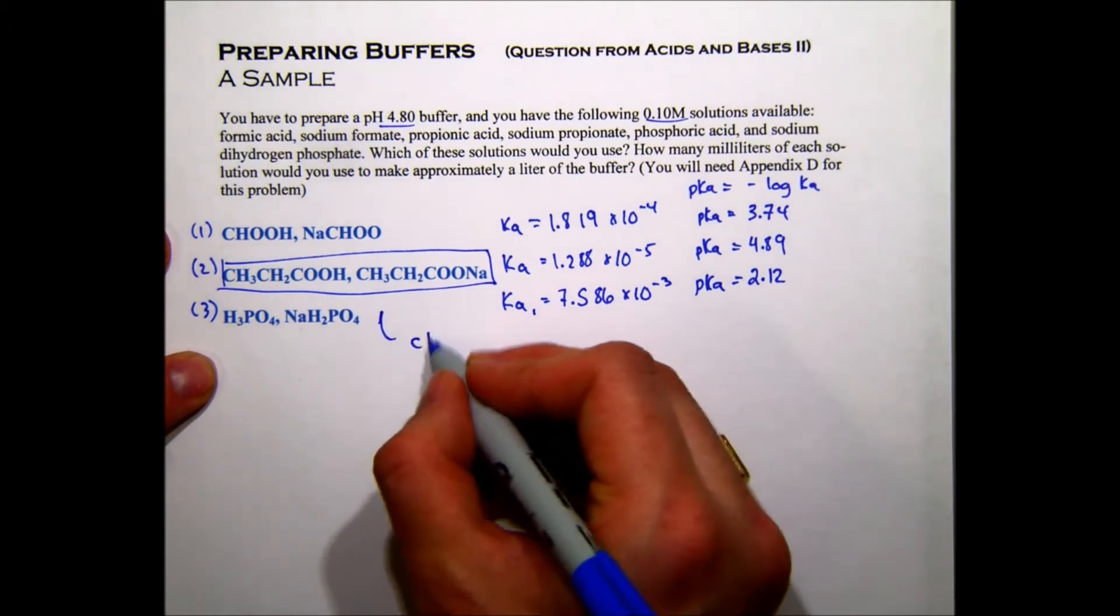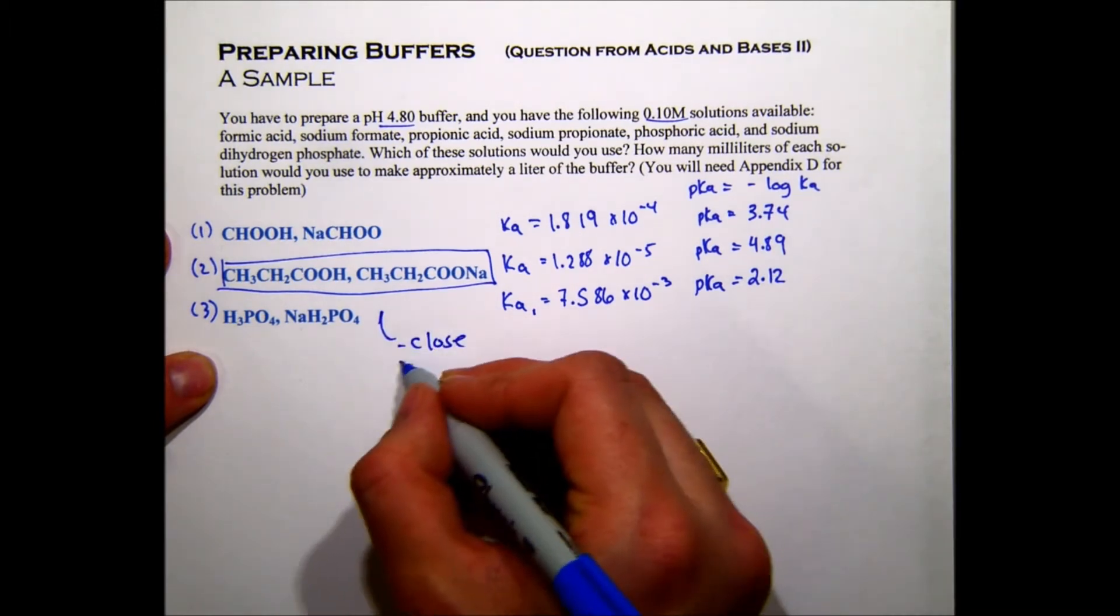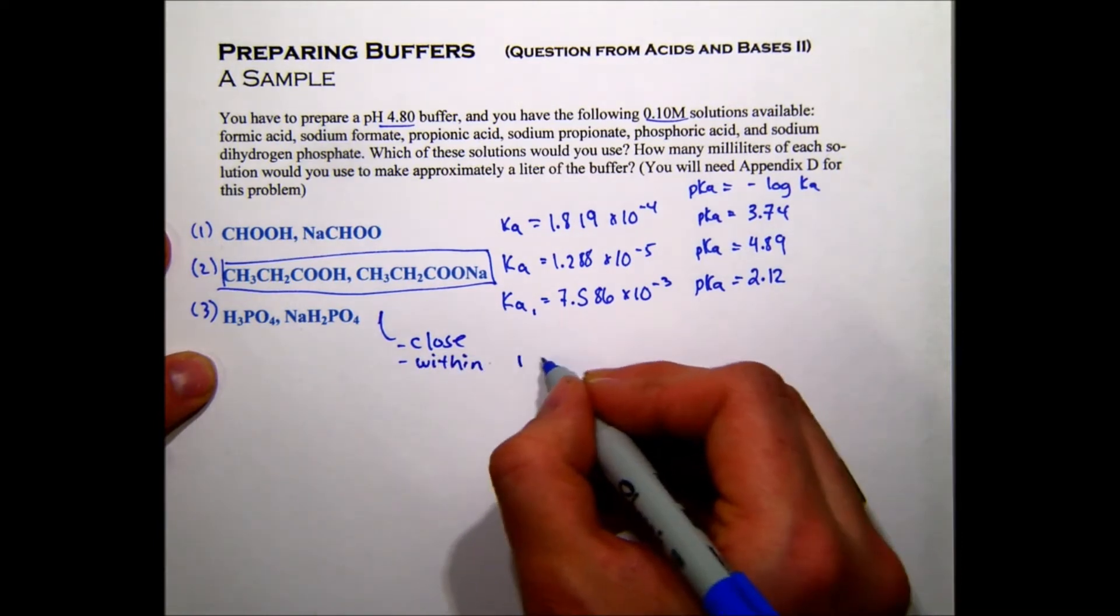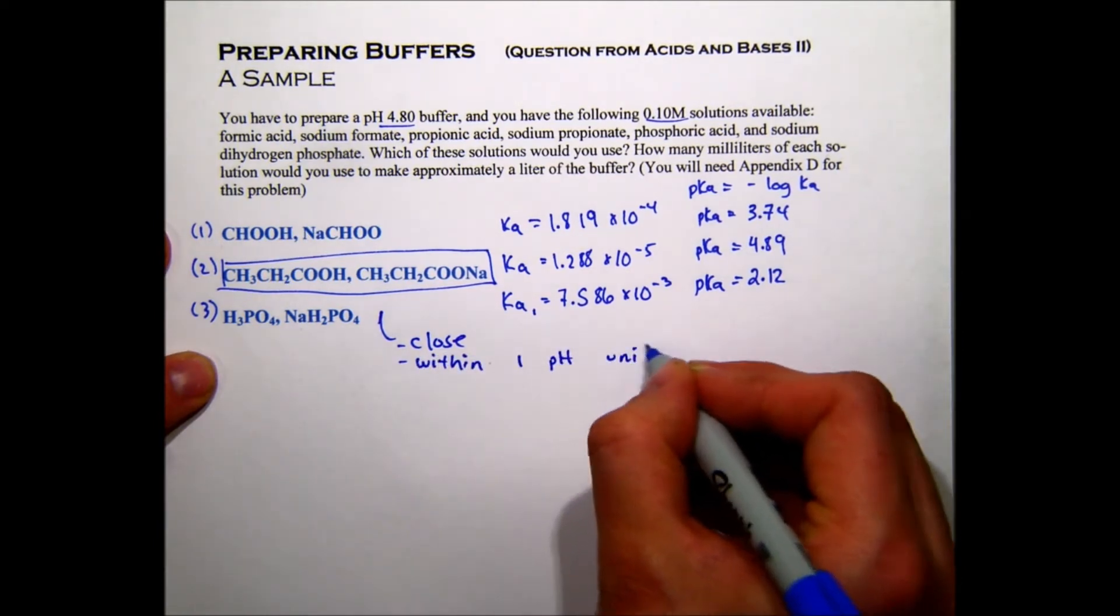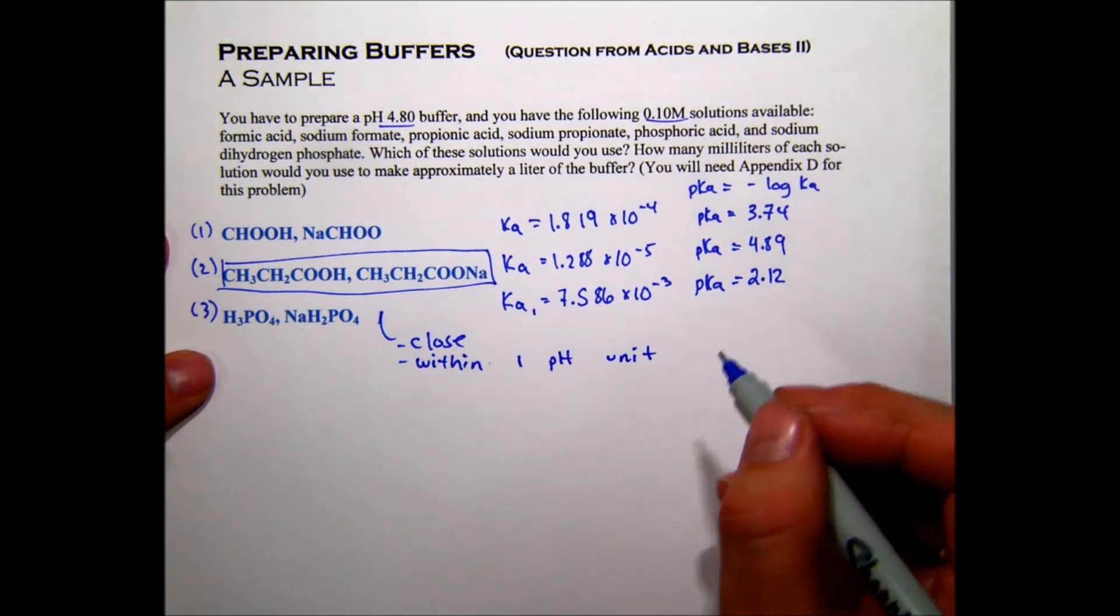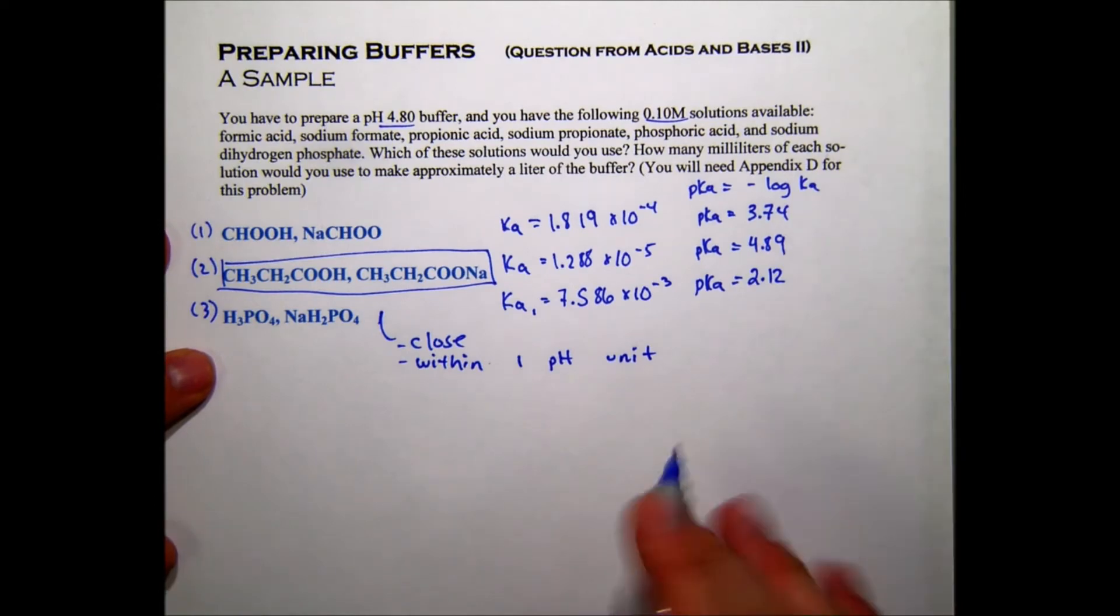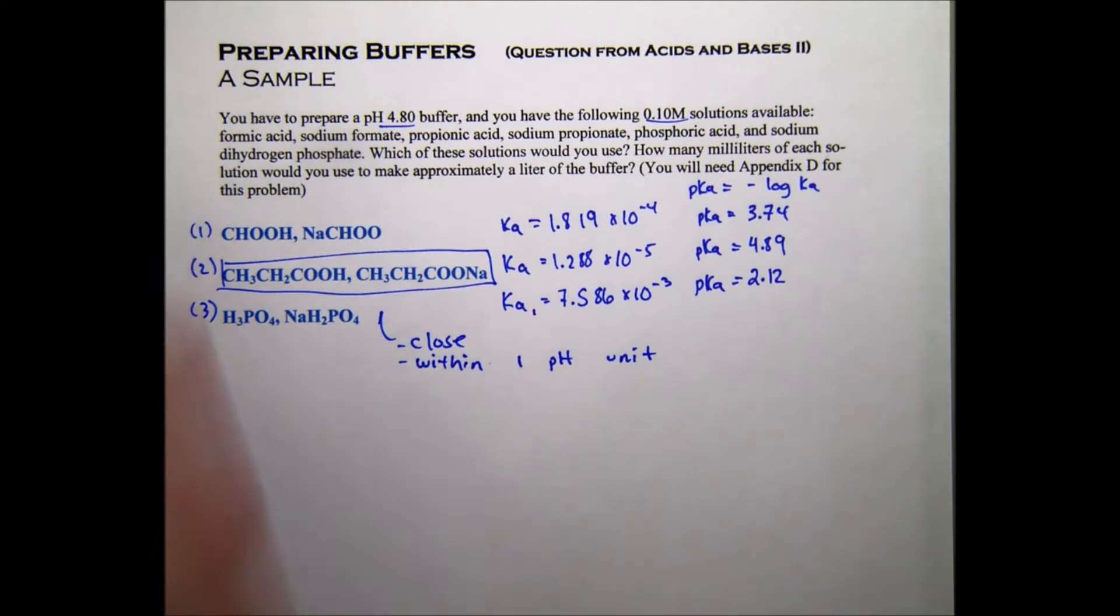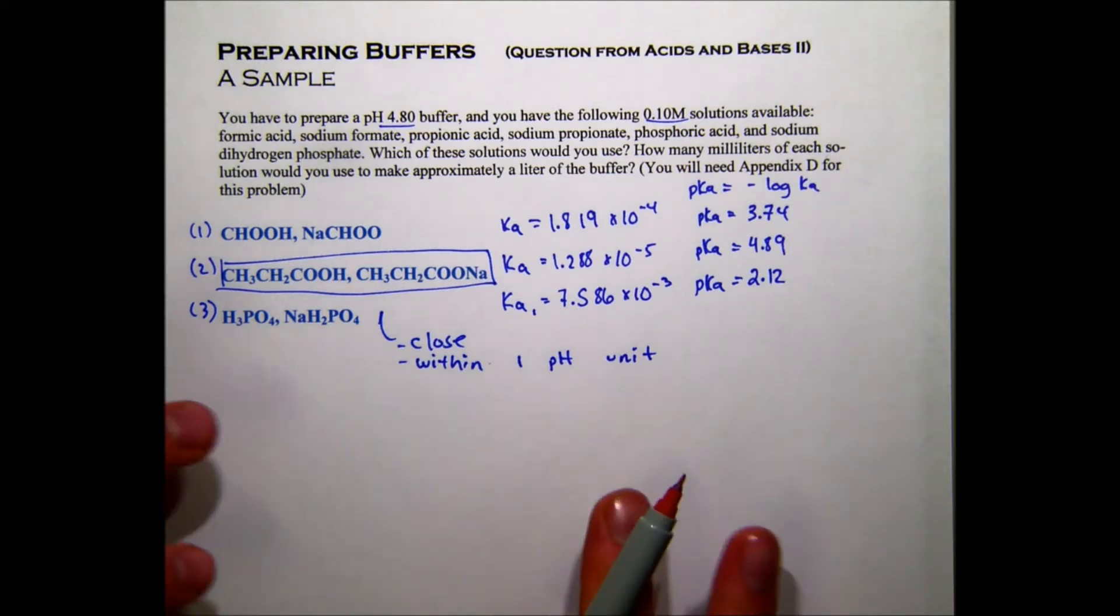And we want it to be close and within one pH unit to make an effective buffer, to increase that buffer capacity. So the second part of this question says, how many milliliters of each solution would you need to make approximately one liter of a buffer? So to do this question, we're going to use the Henderson-Hasselbalch equation.